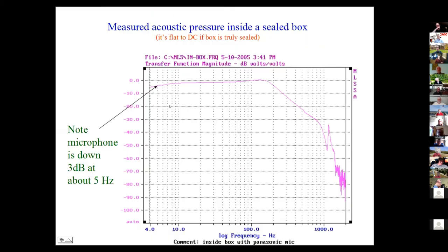Here's a measurement of it. This is the acoustic pressure inside that sealed box. It has a nice flat region here, a bit of resonance there. But it actually falls off, and this microphone is down about 3 dB at 5 Hz. I should have run it at a sampling frequency which would show the microphone falling a larger amount. But this was done for a different purpose.